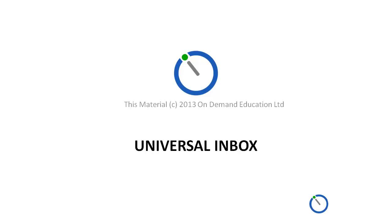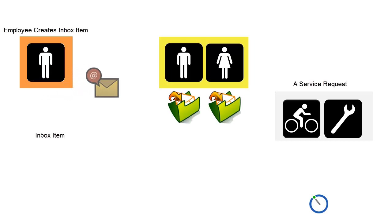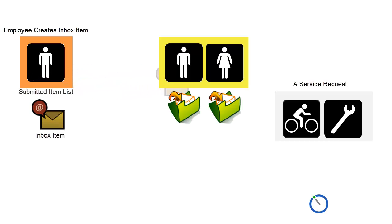Let's consider how the Universal Inbox Business Service allows users to collaborate during a service request process. Consider the following: there's a service request to repair a bicycle. An employee using the business service creates an inbox item specifying two inbox item owners.